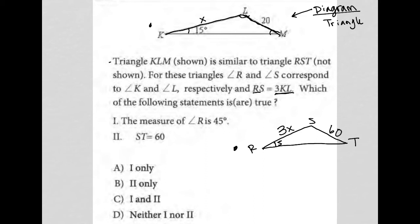And if I wanted to, I could say KM is Y, some other unknown number. And that would make RT equal to 3Y. Okay. So it says, which of the following statements is or are true? One, the measure of angle R is 45 degrees.